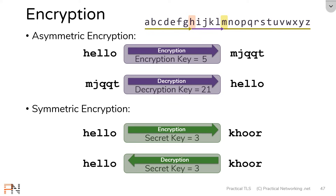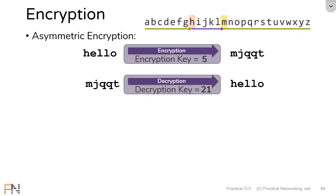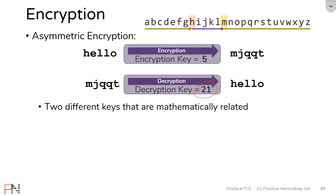Notice I went forward to encrypt and forward again to decrypt, whereas in symmetric encryption you go forward and backwards. With symmetric encryption I used the same key to encrypt and decrypt, whereas with asymmetric encryption I had to use different keys. Those two keys — in this case 5 and 21 — are mathematically related. Whatever I encrypted with 5 could only be decrypted with 21.